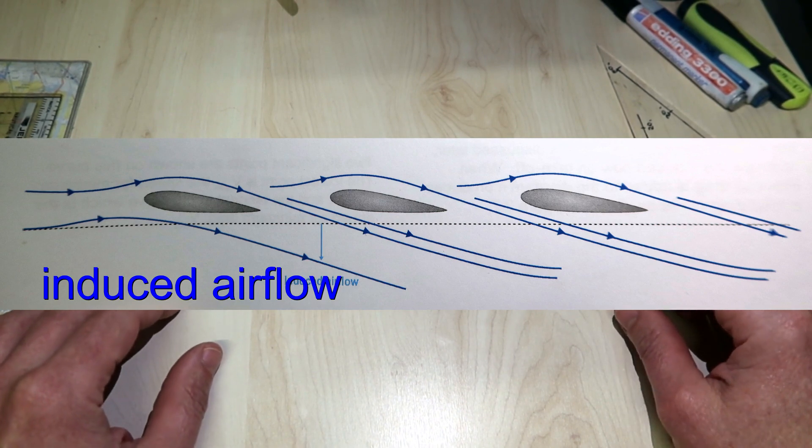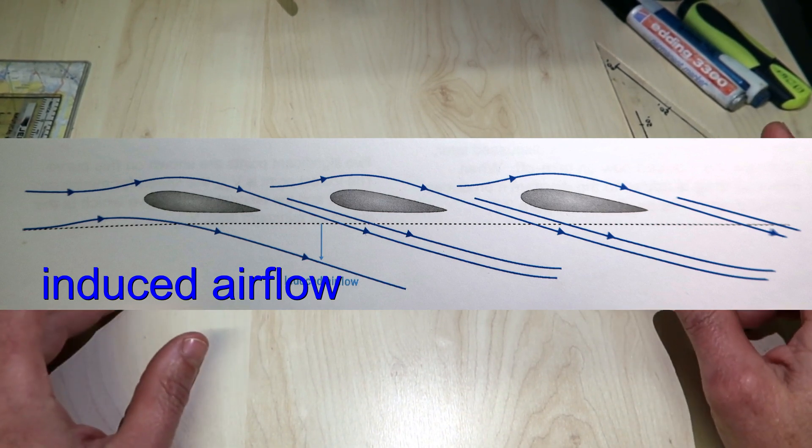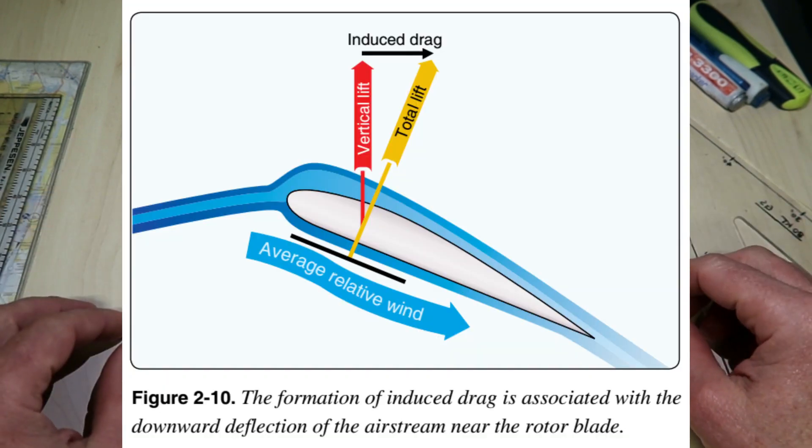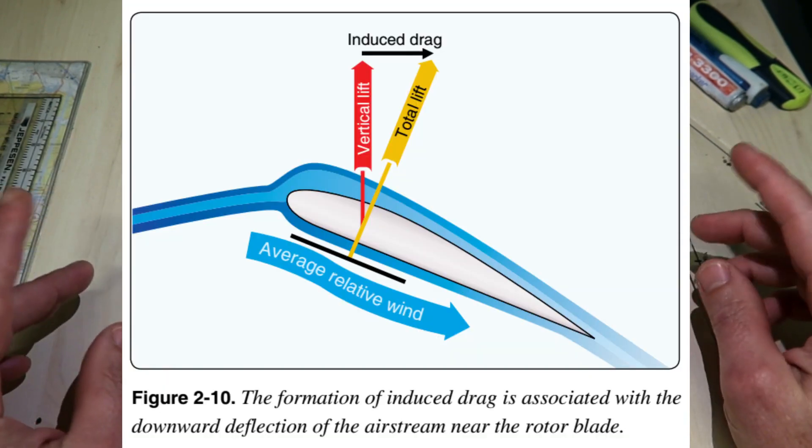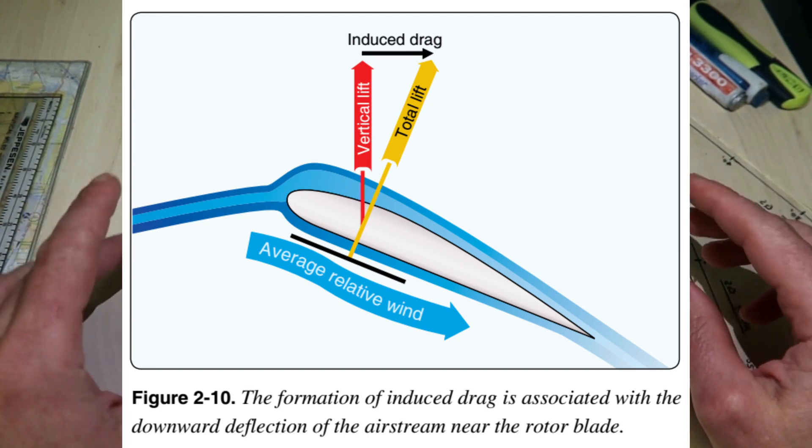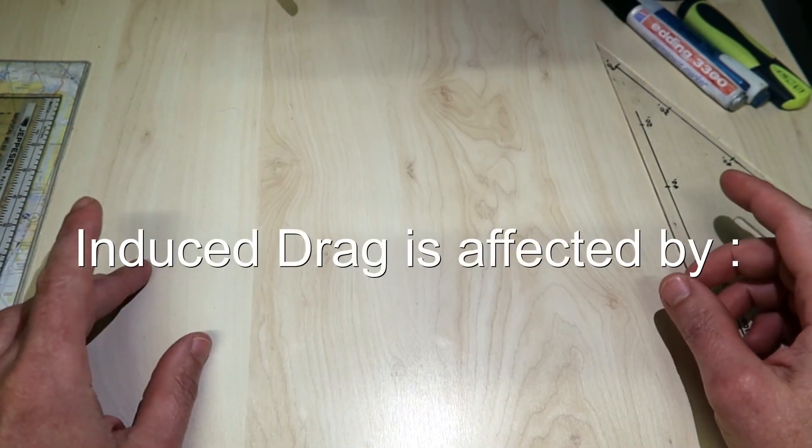There is an additional flow special to a helicopter called induced flow. The magnitude of which affects inflow angle, angle of attack, and therefore lift. Induced flow is described as the mass of air that is forced downwards by the rotor blades.